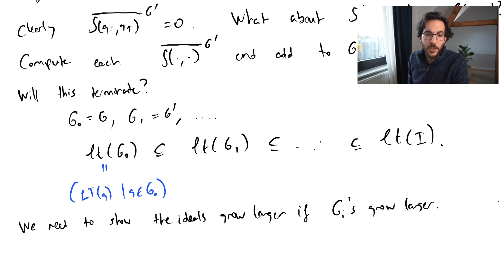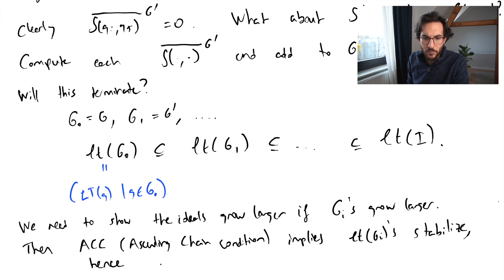When you show this then you can use what's called the ascending chain condition which implies that no ascending sequence of ideals can grow larger indefinitely. When something stops growing larger we say it stabilizes. So this sequence of ideals stabilizes, which implies that the sequence of generators actually stabilize. That can only happen if our residues for each of the s-polynomials are all zero. So this should be a method of computing a Gröbner basis.